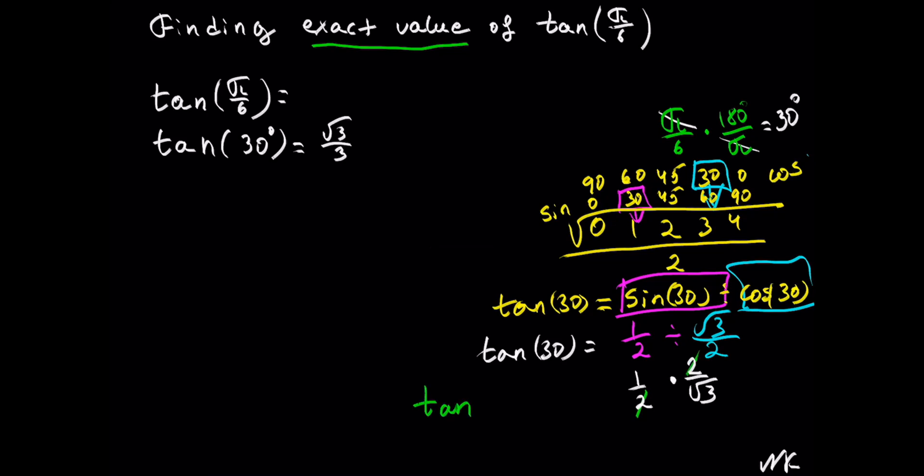So we get tan(30°) = 1/√3, which should be rationalized by multiplying both numerator and denominator by √3.